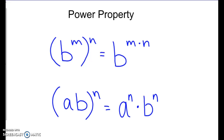The last property we are going to talk about is the power property. The power property is when we have a power or an exponent raised to an exponent. The first definition shows what if we only have one term: b raised to the m power, also raised to the n. When we have this power raised to a power, we are going to multiply those exponents.